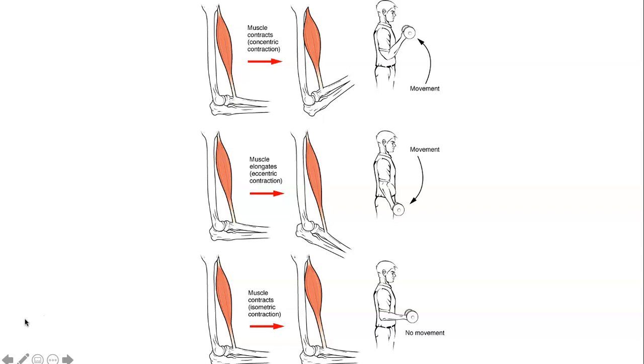Here we see examples of the biceps brachii moving this hand weight up in a concentric contraction and down in the eccentric contraction.